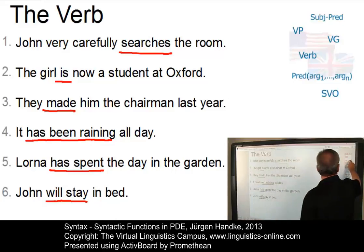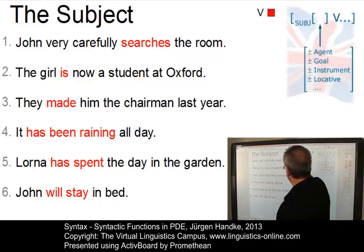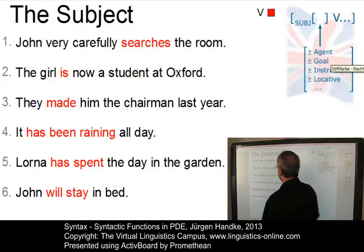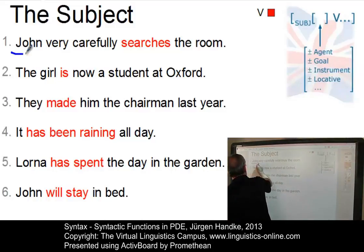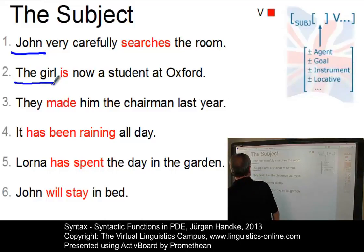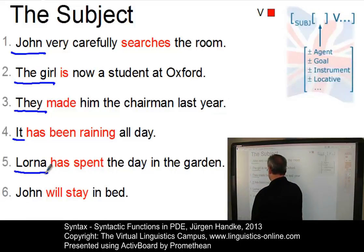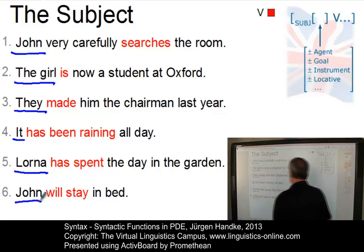Let us now identify the subjects in our sentences. The verbs are now marked red. So let's underline the subject with a blue color. In number one, it is clearly John. Number two, the girl. In number three, it's they. The subject in number four is simply it. Lorna realizes the subject in number five, and John is the subject in sentence number six.